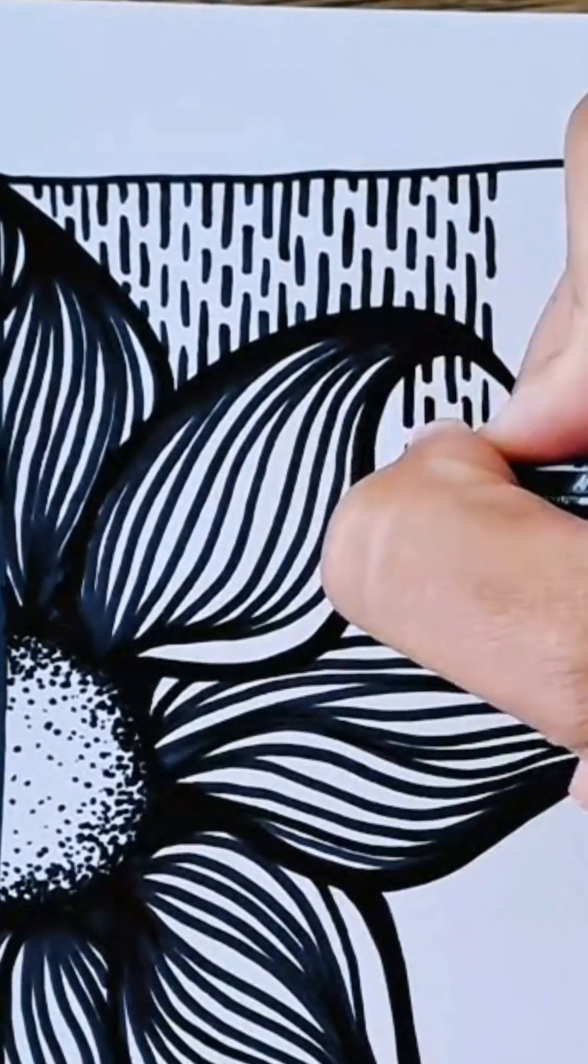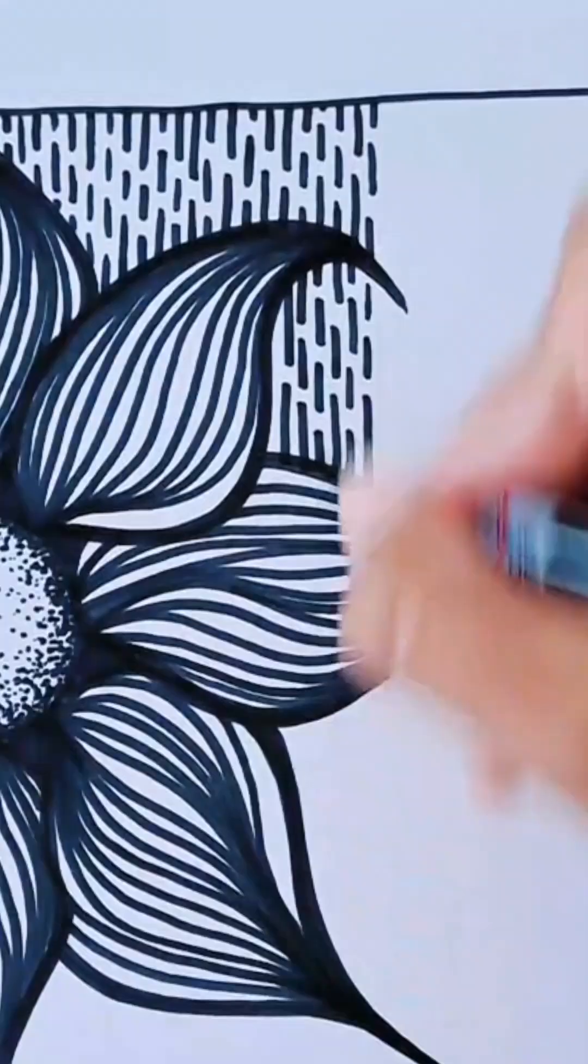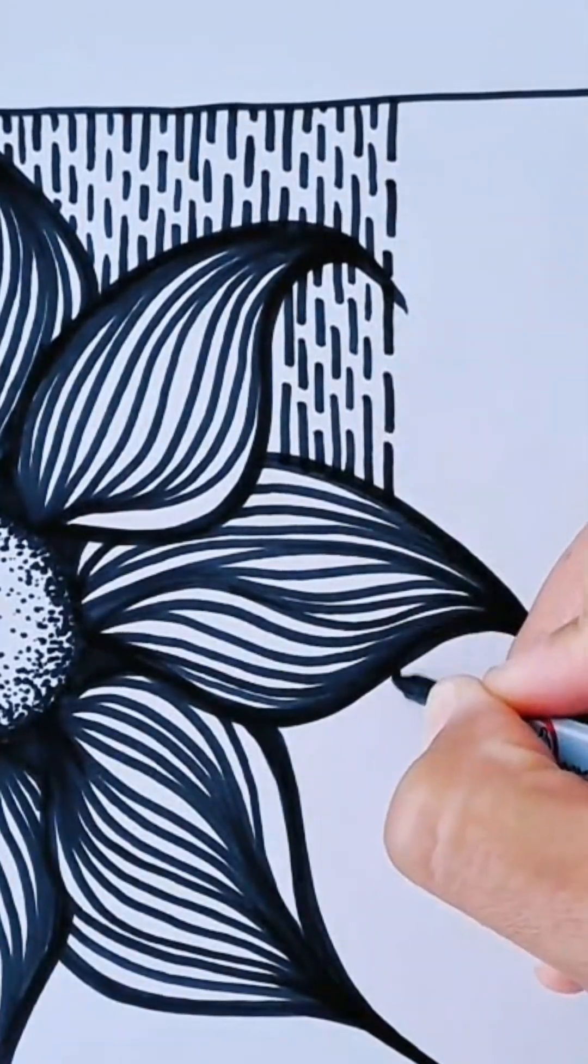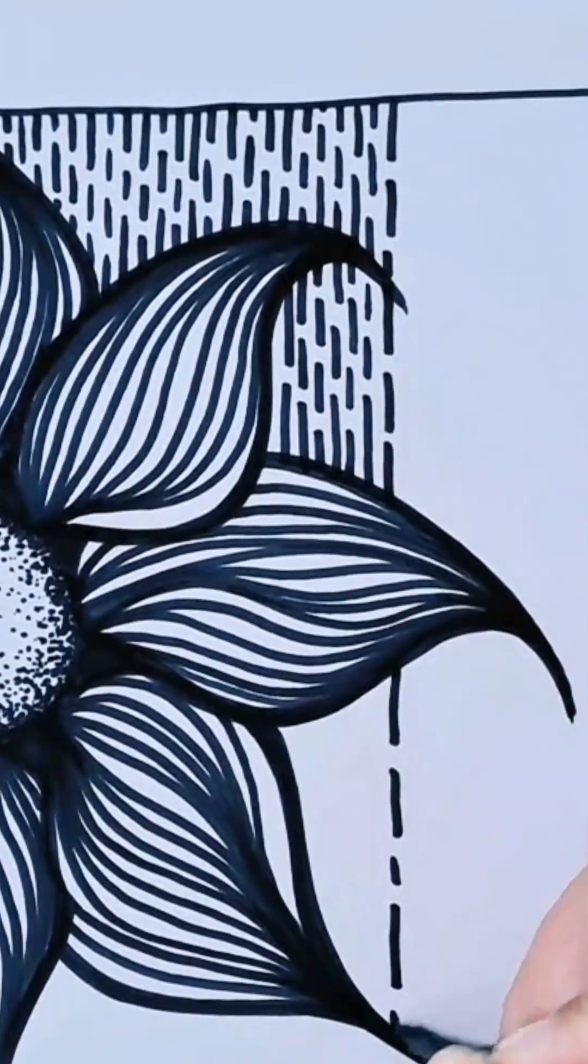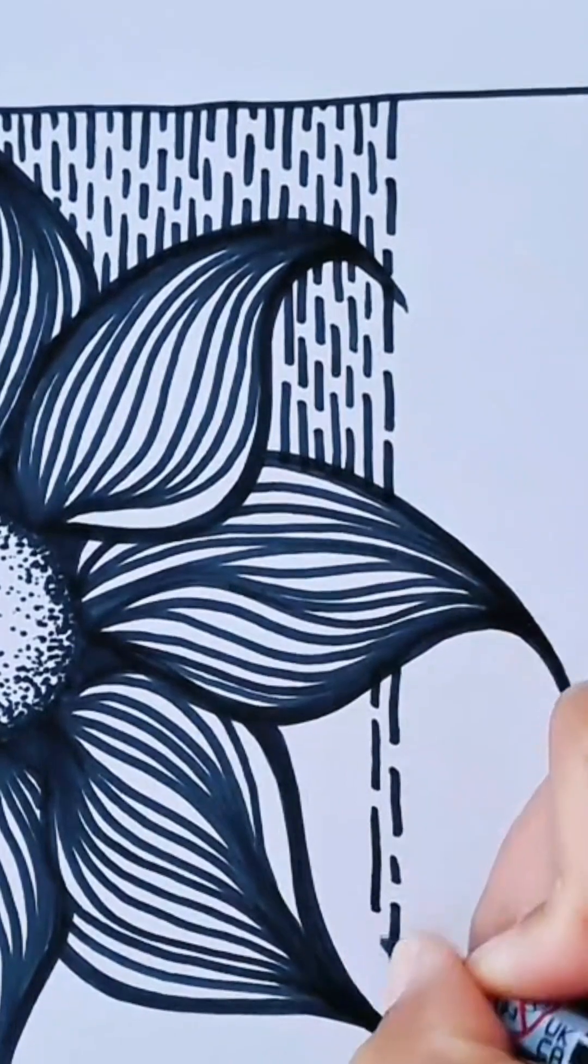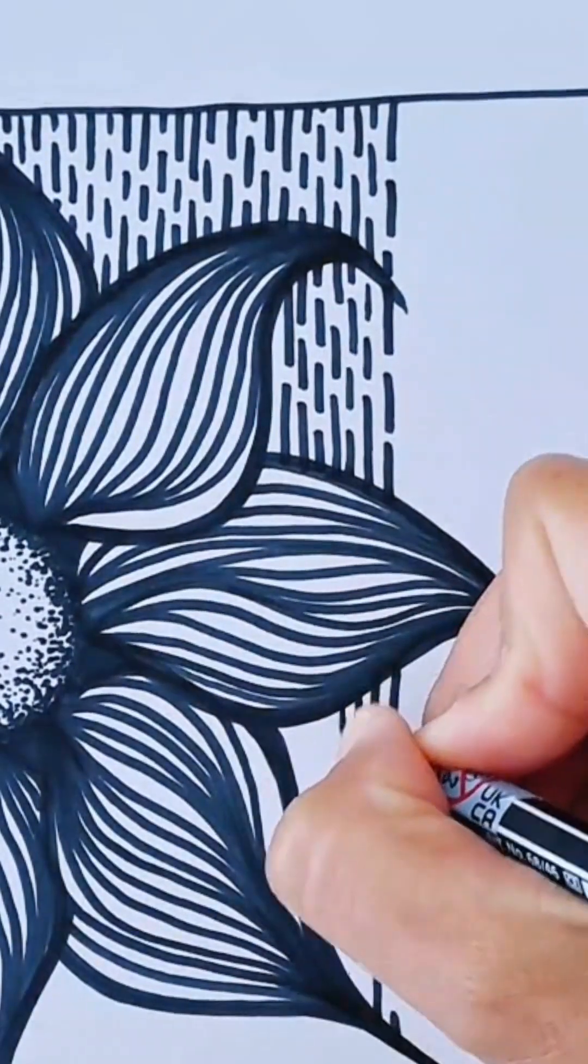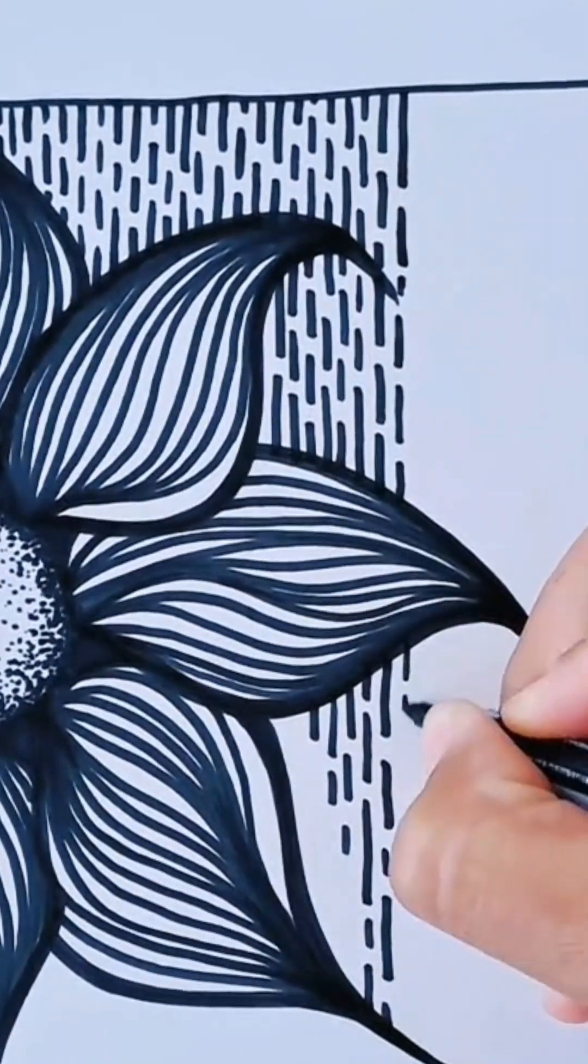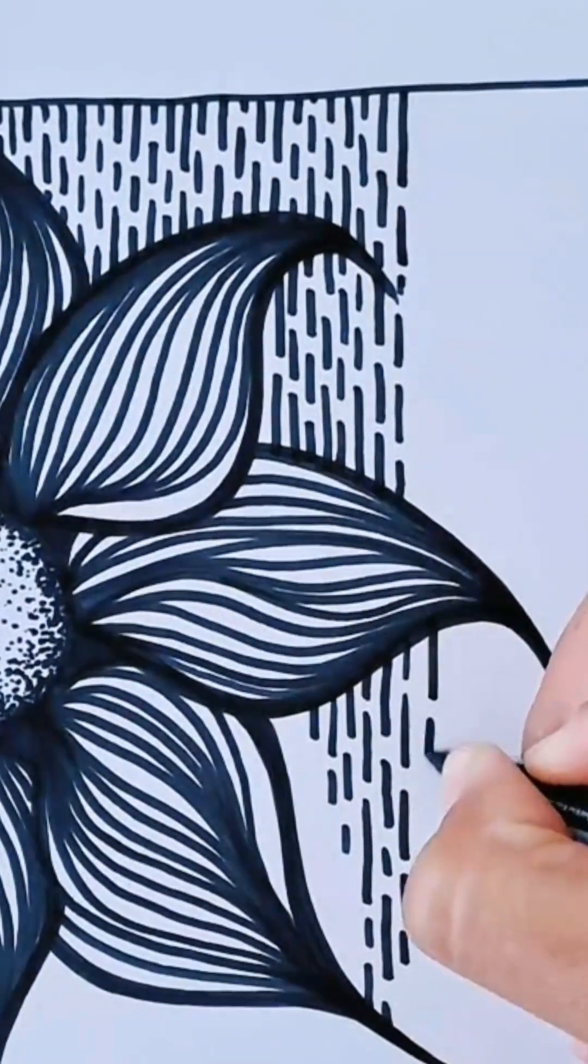But for this particular example, I'm just using the dotted lines. You can make them even, you can make them uneven. I don't know if it matters too much, but I tried to just add a little bit of variety by making sure that I've got some short ones and some long ones as well.